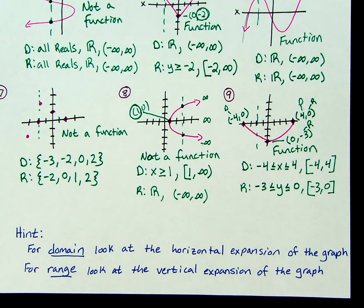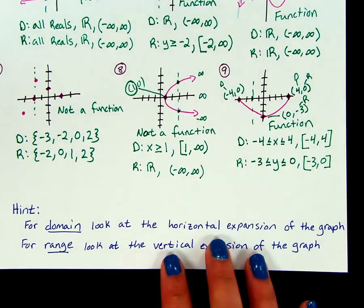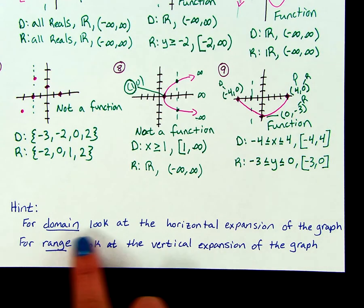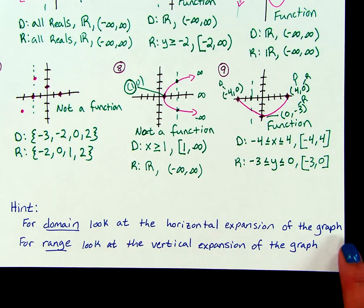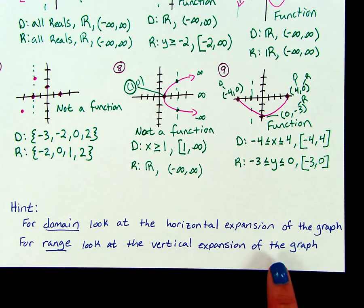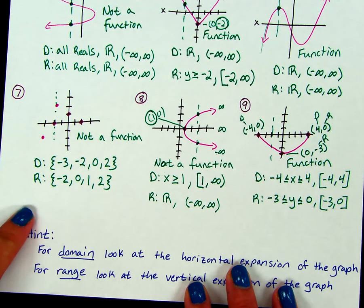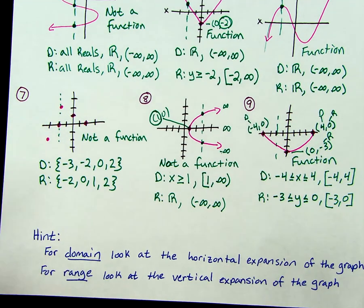When figuring out domain and range — and we'll be doing this all year — it's very important you understand this concept. For continuous graphs, domain is the horizontal expansion and range is the vertical expansion. If it's a discrete graph, like number 7, then it's a list of numbers. Continuous graphs will always be some sort of inequality.